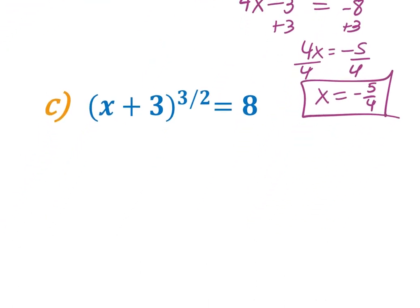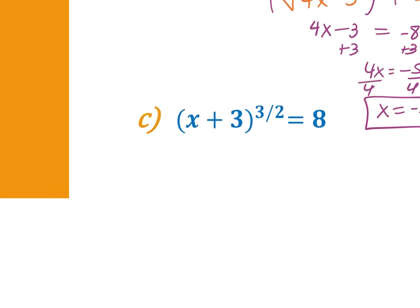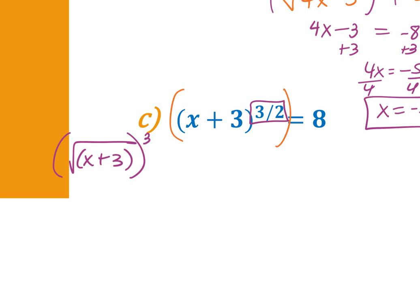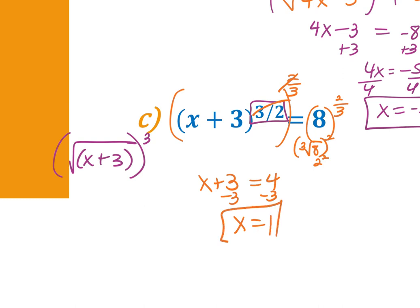For (c), it involves a fractional exponent — (x + 3)^(3/2) = 8. Three-halves means take the square root and cube it, but to solve, raise both sides to the reciprocal power, which is 2/3. The exponents cancel to 1, and the right side becomes the cube root of 8 squared: cube root of 8 is 2, squared is 4, so x + 3 = 4, giving x = 1. Since the original denominator was 2 (meaning a square root), check that plugging in x = 1 keeps the expression under the root positive — it does, so x = 1 is valid.